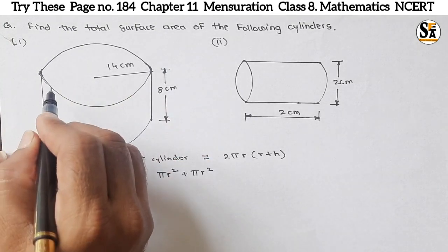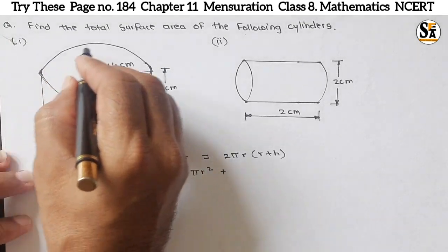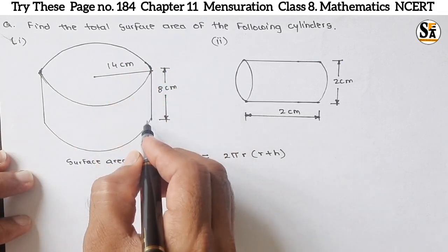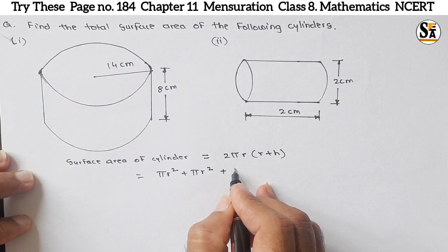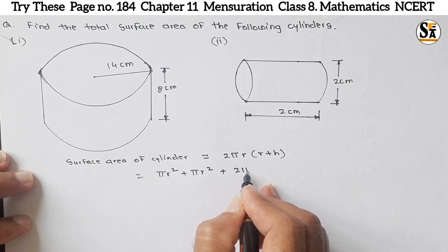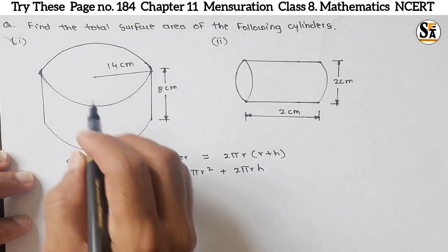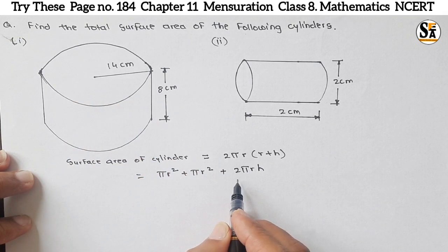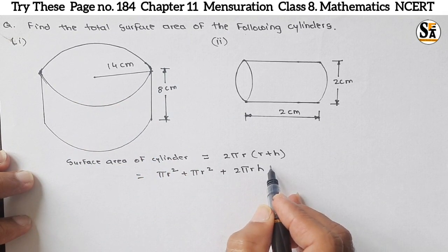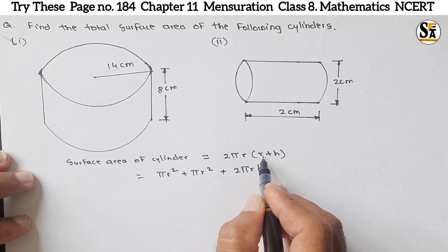And this lateral surface area is nothing but the perimeter multiplied by this height. Perimeter is 2πr and height is h. This is the bifurcation of the total surface area of cylinder. If we add all these, we will get 2πr(r+h).